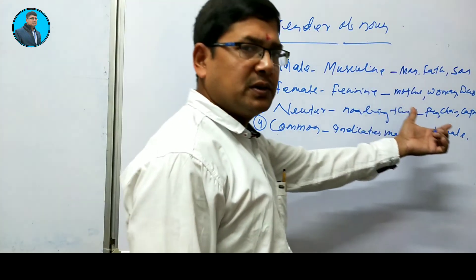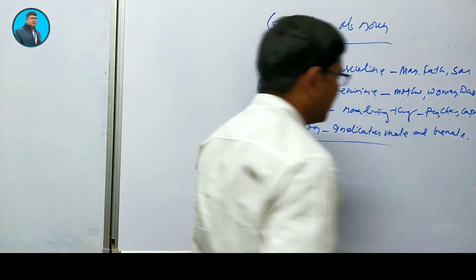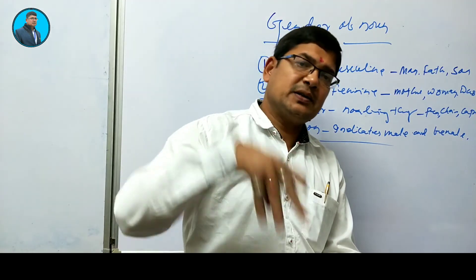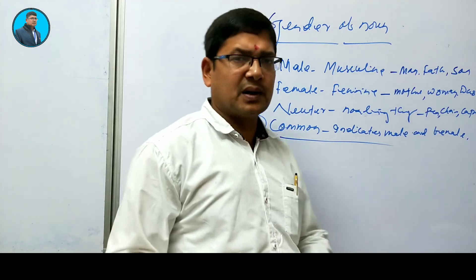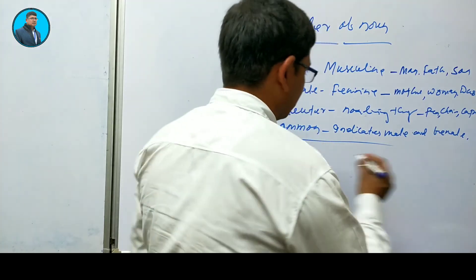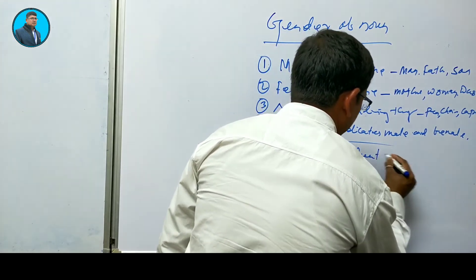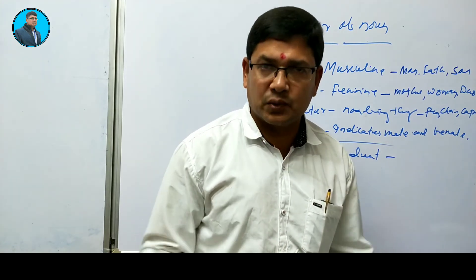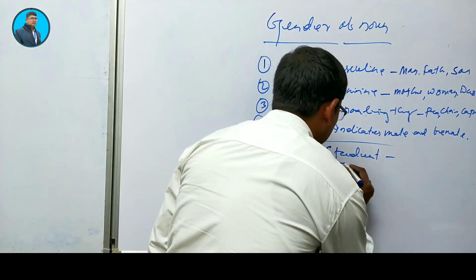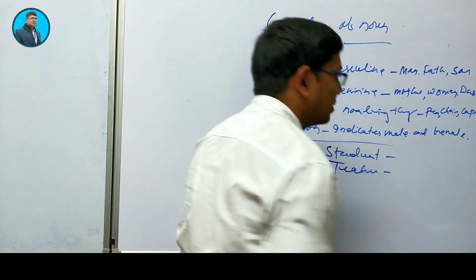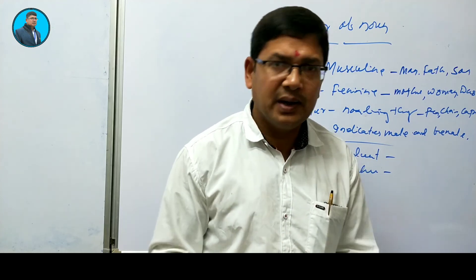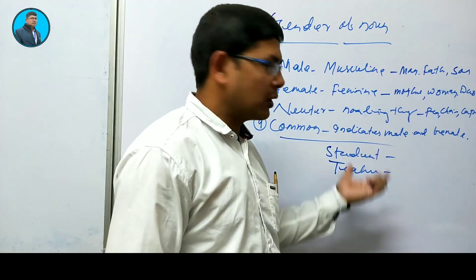The last one is common gender. Common gender indicates both genders — it is a word used for both men and women. For example, 'student' — whether we are referring to a girl or a boy, we just say student. Similarly, 'teacher' — we don't say lady teacher or sir teacher, we simply say teacher. Ma'am is also a teacher, sir is also a teacher. So this is what we call common gender.